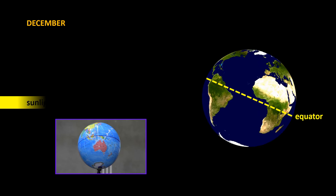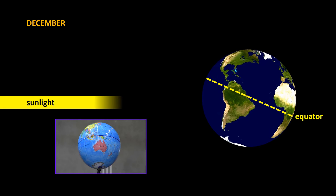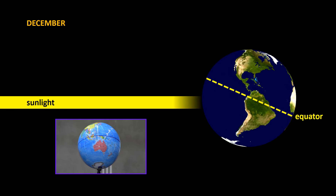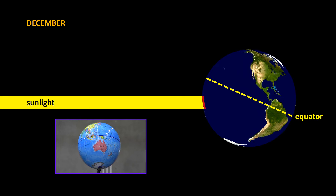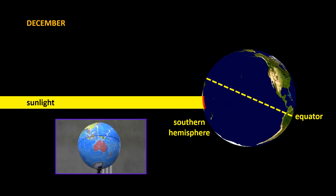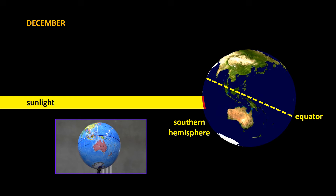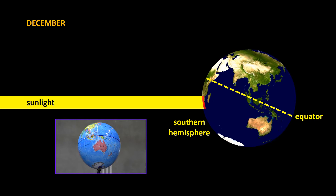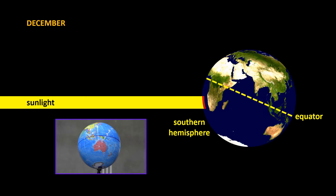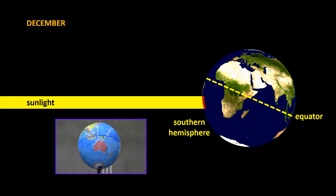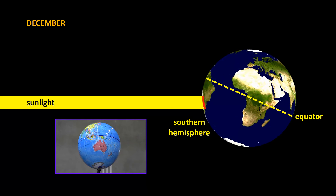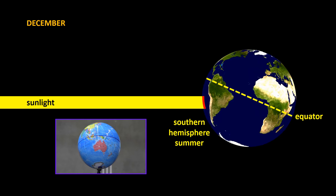If we imagine a beam of sunlight with all its energy striking the Southern Hemisphere, the energy is concentrated in a small area which heats up a lot. Here, the Southern Hemisphere is experiencing summer.